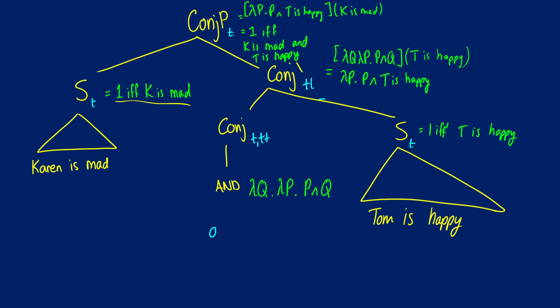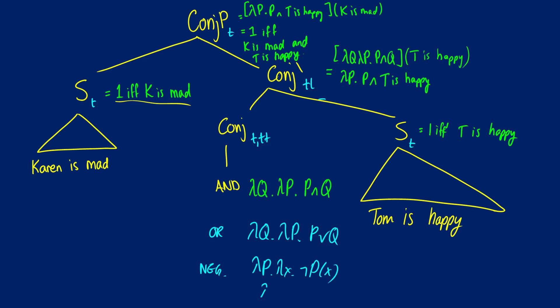Now, if you're thinking about how to do a word like 'or,' it's very similar — lambda Q dot lambda P dot P or Q. This is just like when we saw negation earlier, the same pattern as lambda P dot not P. So you can see how we can handle our logical operators, and it's no different.